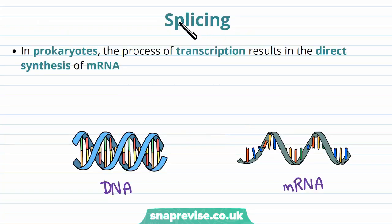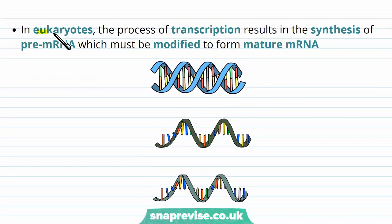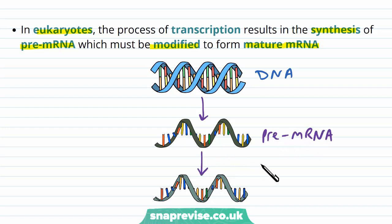Some mRNA needs to undergo a process called splicing. In prokaryotes, transcription results in a direct synthesis of mRNA — the DNA is directly turned into mRNA with no further modifications. In eukaryotes, there are more steps: transcription results in a pre-mRNA, which must be modified to make the mature, normal version of mRNA. So the pathway goes from DNA to pre-mRNA, and then to mature mRNA.